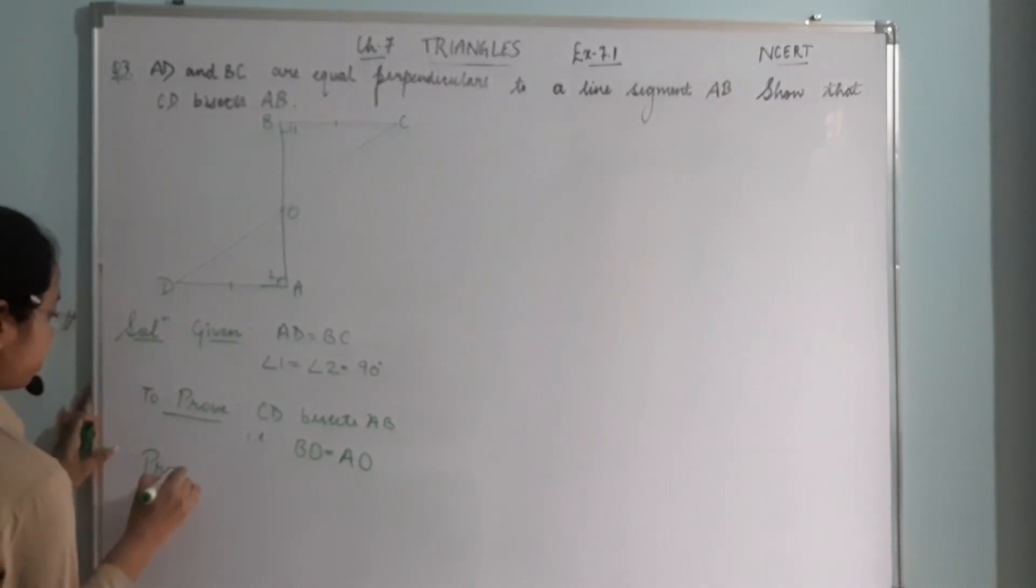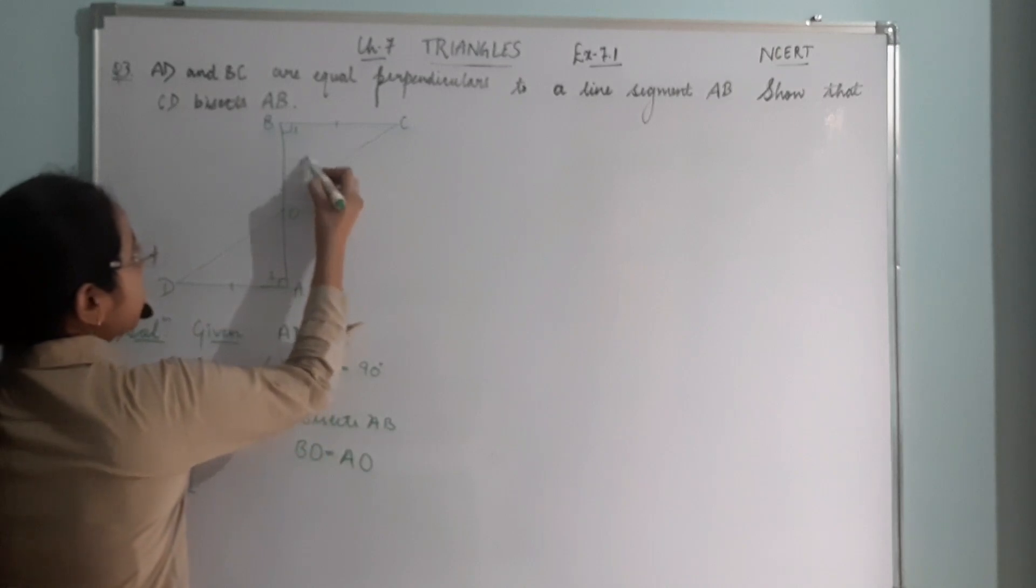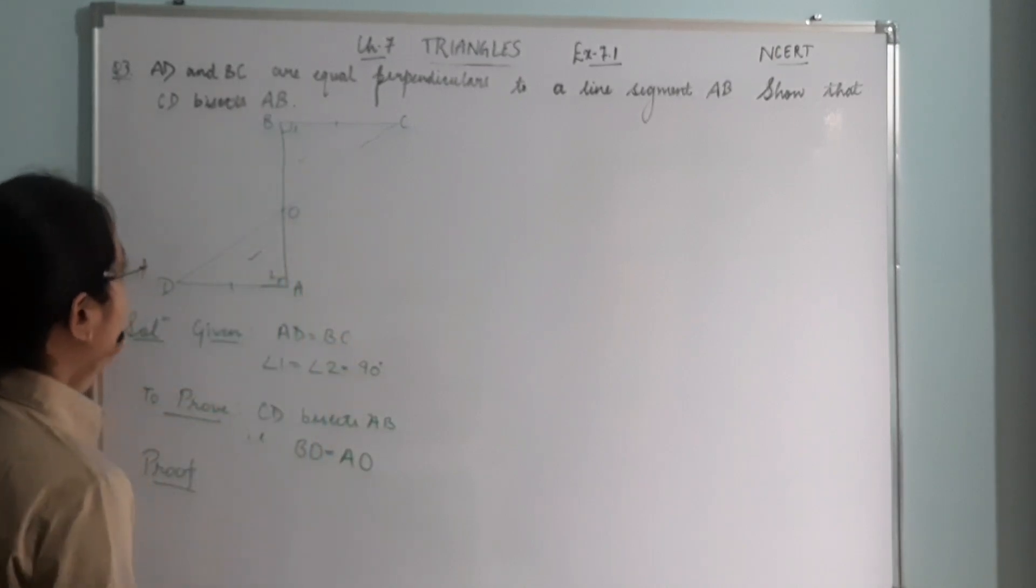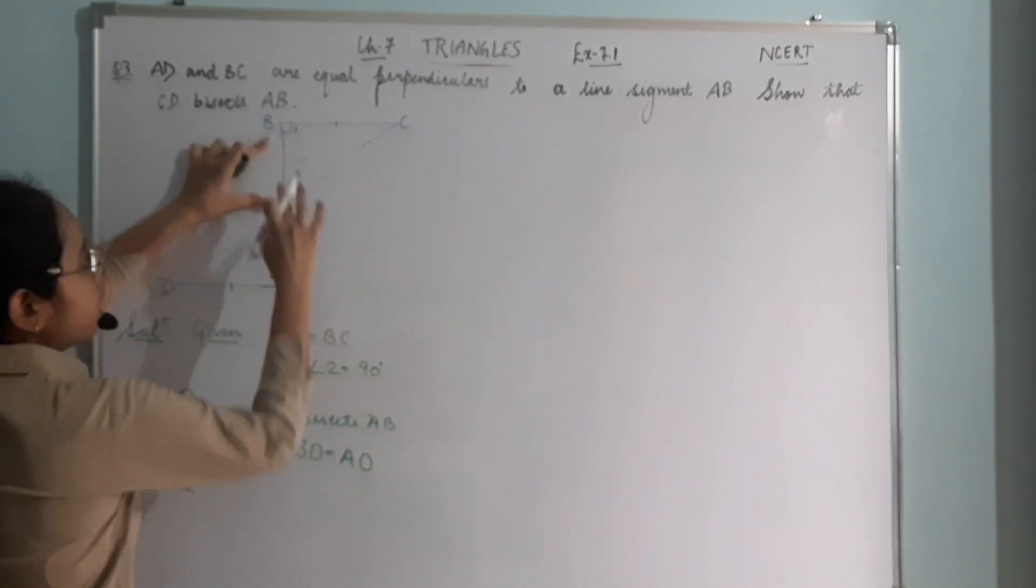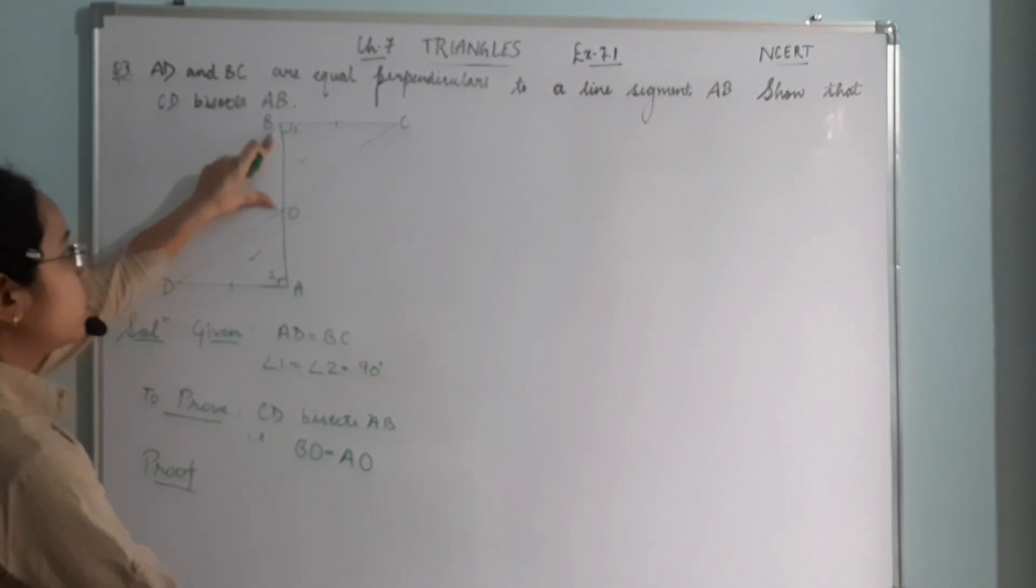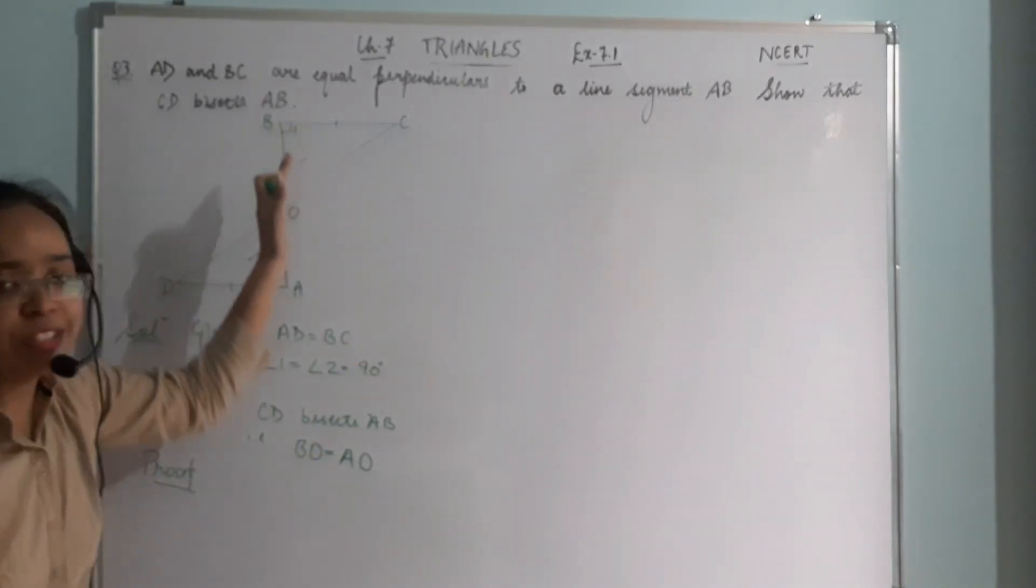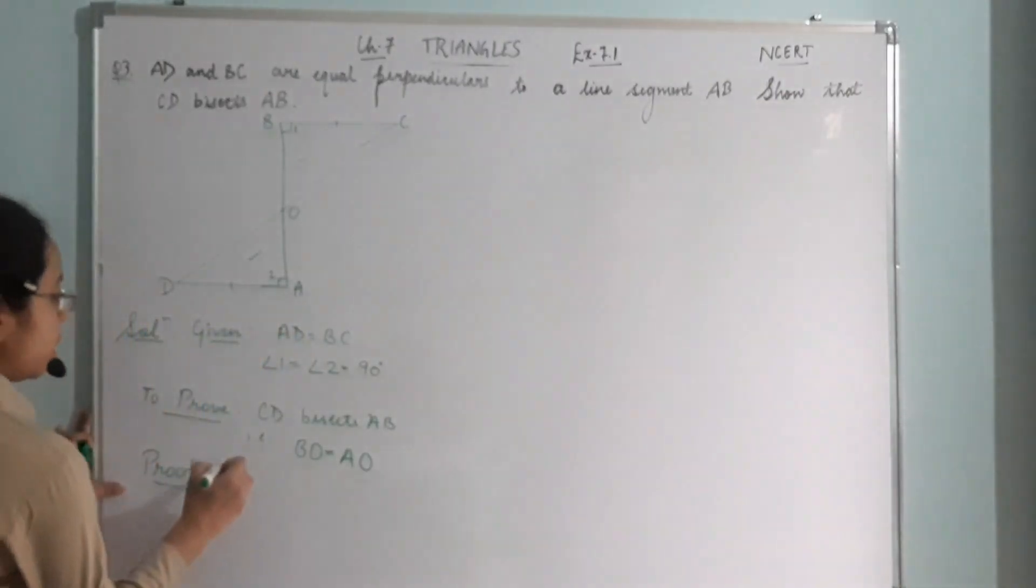Now, proof. If we can prove both triangles as congruent, then by CPCT their corresponding parts will be equal, so AO equals BO. So our task is to prove both of these triangles as congruent.